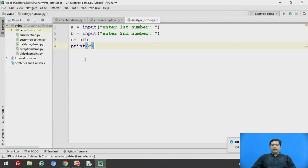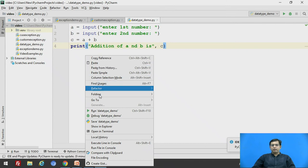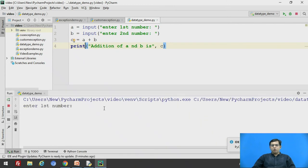We have taken two numbers, say a, we have taken input. The input function is used to take the value from the user and similarly we have taken a second number b from the user. Now we have calculated the addition of a plus b and we are storing the value in c and here we are printing, we will say addition of a and b is and we will pass c. We will just check whether this particular code is correct, so enter first number that is 10, second number that is 22 and the addition is 32. So this is the output.